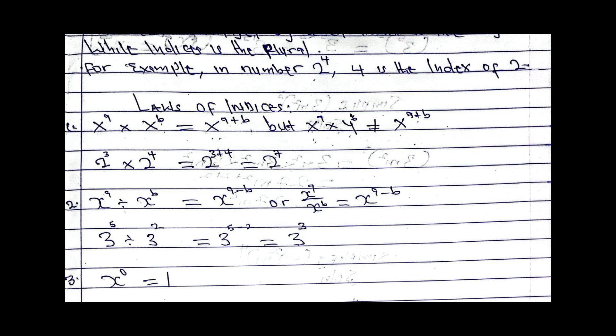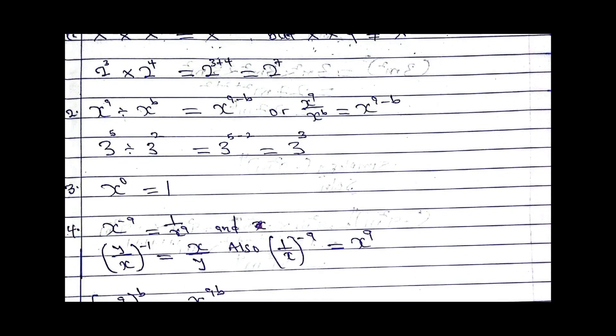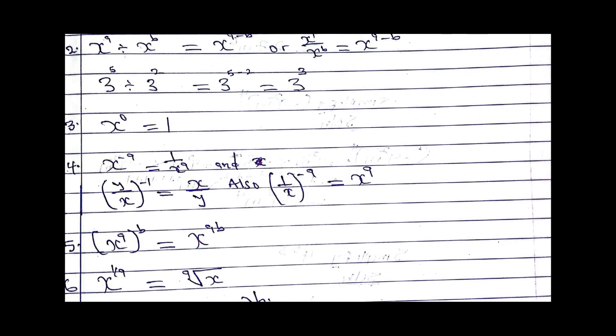The next one is the zero law: x power zero equals one. Anything to the power zero is one. Even if you have a million, a million power zero is one — any number to the power zero must be one.